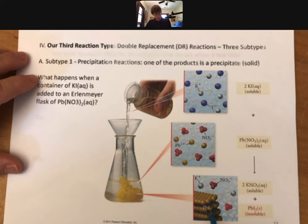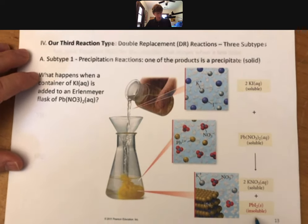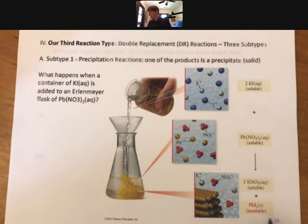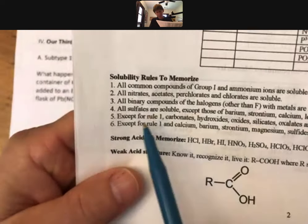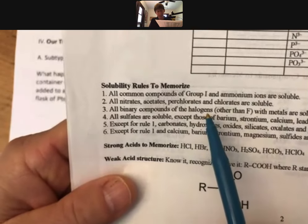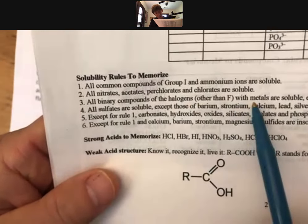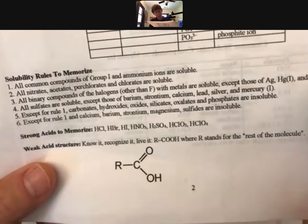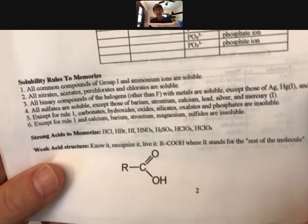What happens is, even though both of the solutions are aqueous and have no solid in them, when you add them together you get a solid. And that solid is lead(II) iodide. According to our solubility rules, all binary compounds of the halogens - so iodine is a halogen - with metals are soluble except those of... and there's lead.